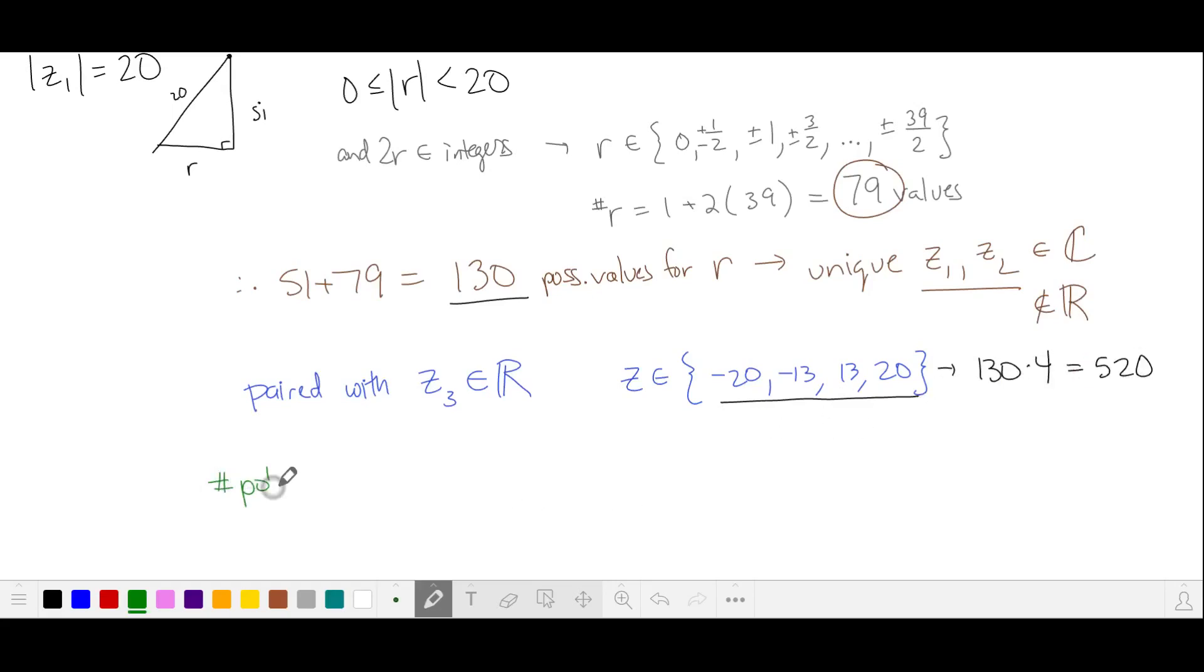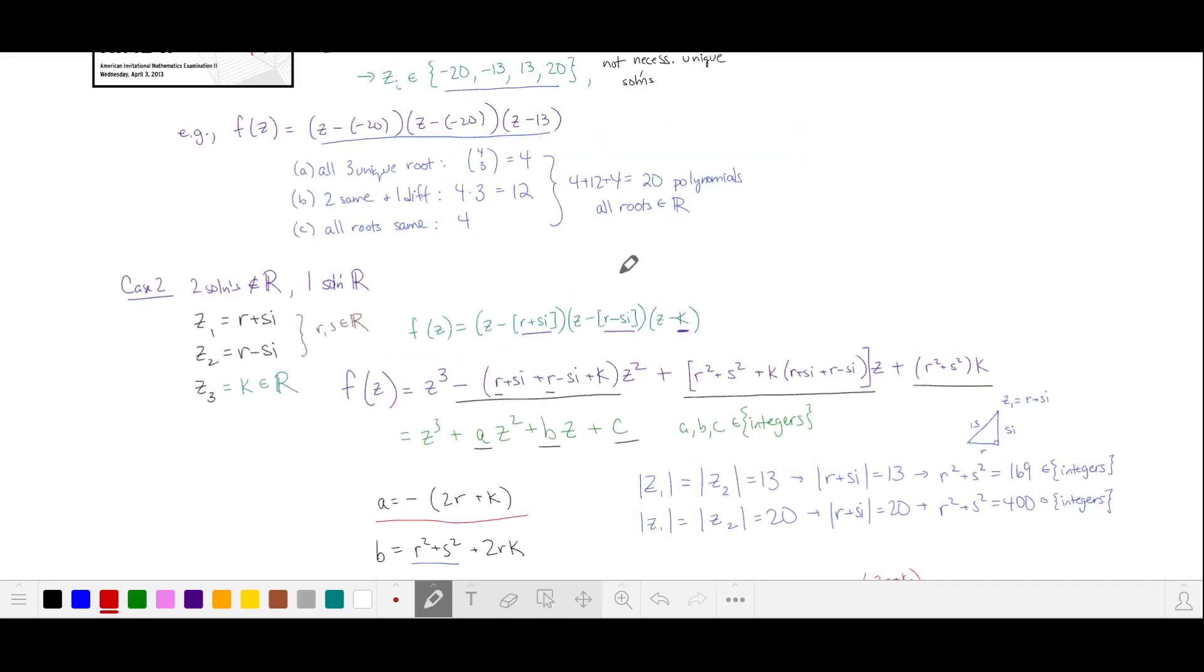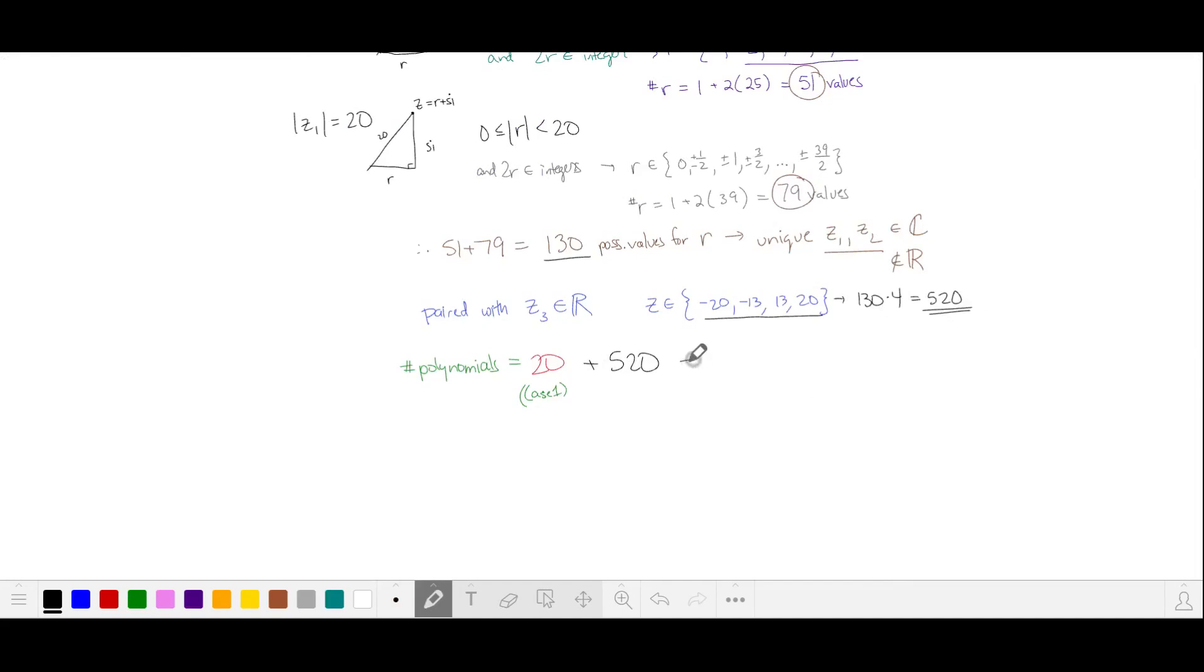So the total number of polynomials from case 1, where all three roots were real, we had 20, plus the 520 from case 2, gives us our answer of 540.